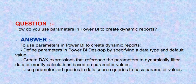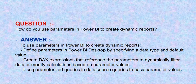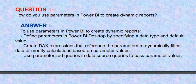Our next question is: how do you use parameters in Power BI to create dynamic reports? Your answer should be: to use parameters in Power BI to create dynamic reports, define parameters in Power BI Desktop by specifying a data type and default value. Create DAX expressions that reference the parameters to dynamically filter data or modify calculations based on parameter values. Use parameterized queries in data source queries to pass parameter values dynamically. Configure report visuals to interact with parameters, allowing users to change parameter values and see updated results in real-time.